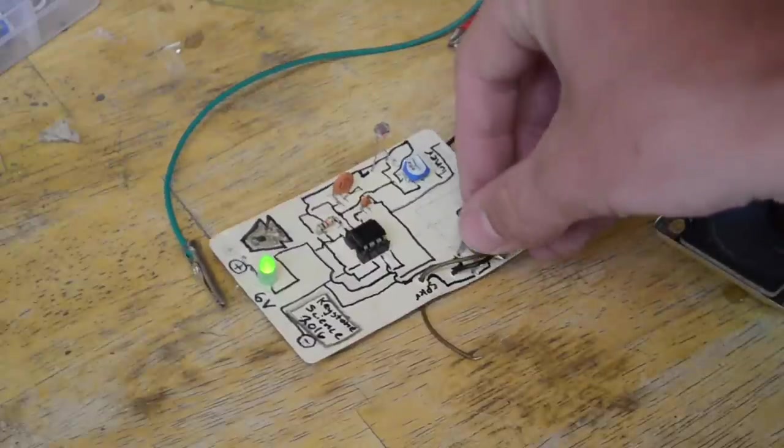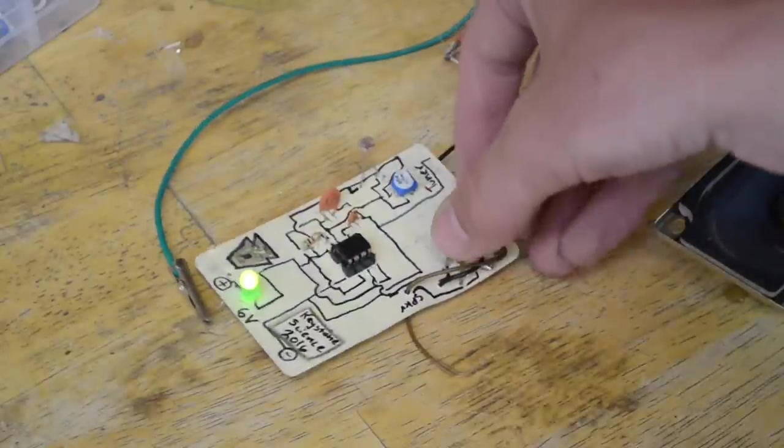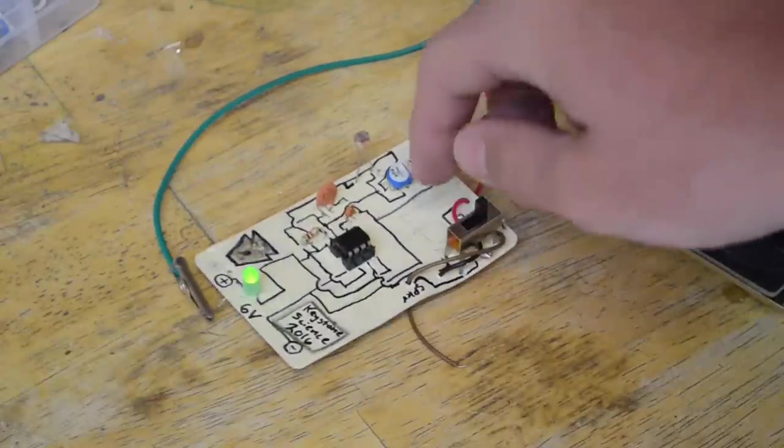So right now it's set to the auxiliary cord, but if I change it, it goes to speaker. And then the third switch, since this is a three option switch, I may have an LED blinking thing.